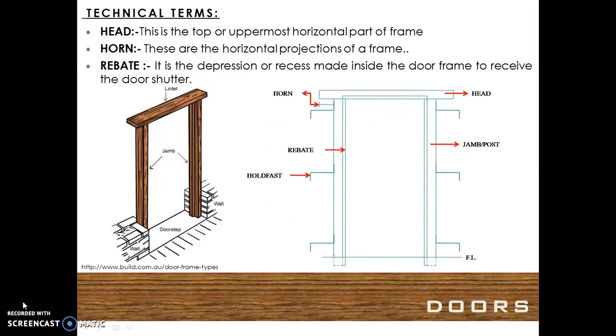The technical terms in a door frame are: the head, this is the top or the uppermost horizontal part of a frame. The horn, these are the horizontal projections of a frame. The rebate, it is the depression or recess made inside the door frame to receive the door shutter.